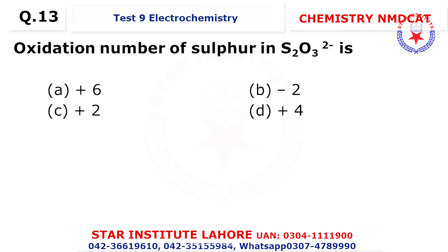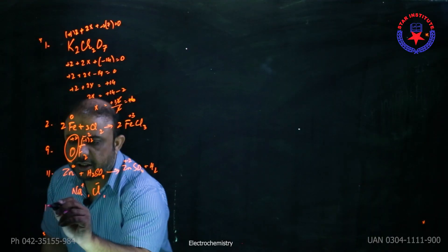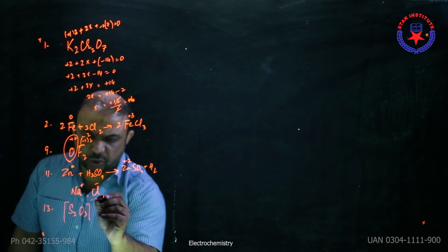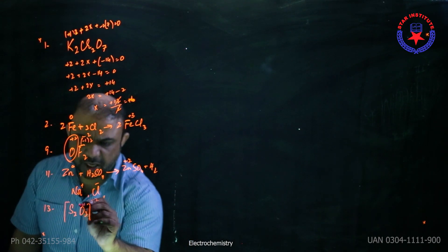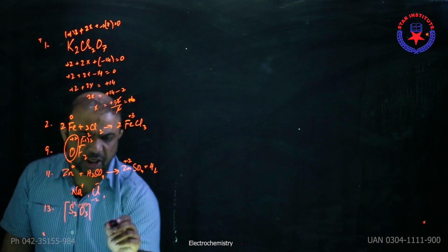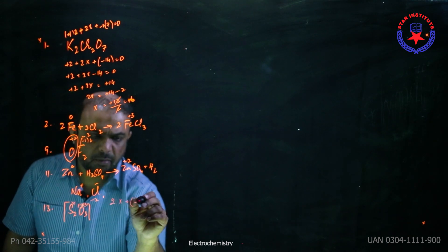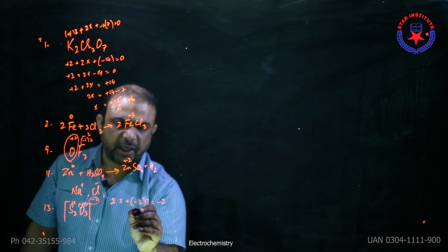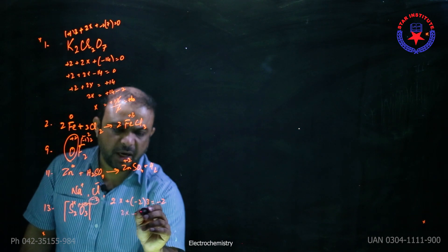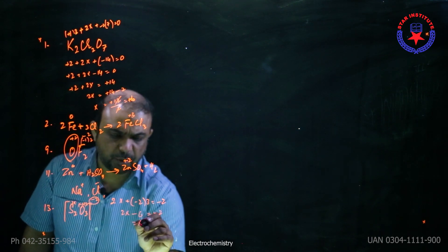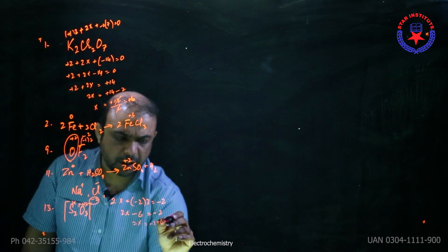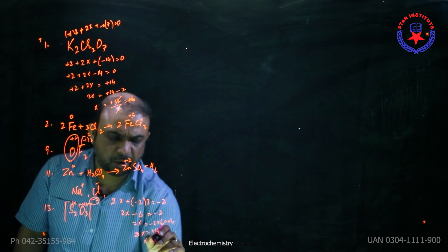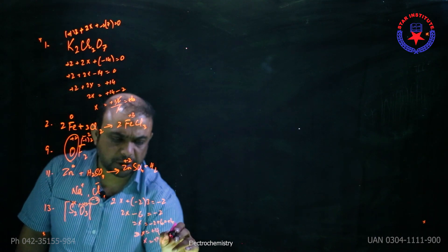Question number 13: the oxidation number of sulfur in S₂O₃²⁻. There is a minus two charge on it, so the two oxygens are minus two each, multiplied by three, and two x for sulfur. The equation is: 2x + (−2×3) = −2. So 2x − 6 = −2, which gives 2x = +4, therefore x = +2.